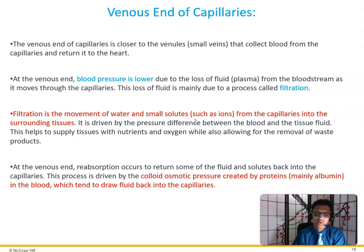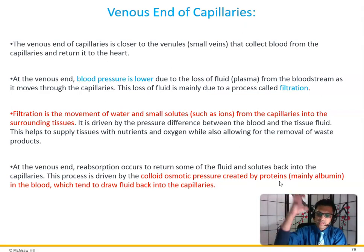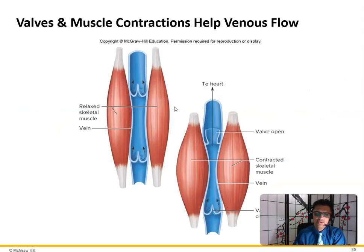Filtration is the movement of water and small solutes such as ions — potassium, calcium, sodium — from the capillaries into the surrounding tissues, driven by the pressure difference between blood and tissue fluid. This helps supply tissues with nutrients and oxygen while allowing removal of waste products. At the venous end, reabsorption occurs to return some fluid and solutes back into the capillaries, driven by colloid osmotic pressure created by proteins that attract water back into the capillaries. As muscles contract, blood is pushed through the veins, and the one-way valves prevent backflow.